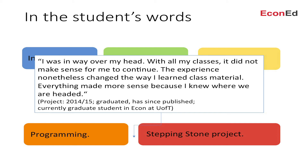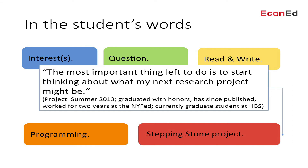The next student developed the question and the reading and programming skills, then realized the question was too challenging and was taking too much time away from his classes. The project was a bit too ambitious. But he found that having had that experience, he learned differently in all of his classes going forward because he knew what the goal line looked like and where they were moving toward. That student has since graduated, published, and is currently a PhD student in economics at the University of Toronto. Finally, the last student finished the project and said the most important thing left to do is to start thinking about what my next research project will be. He graduated, spent two years at the NY Fed, and is currently a graduate student at HBS.